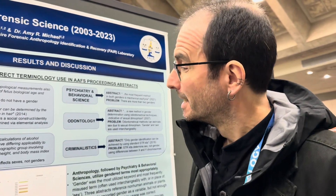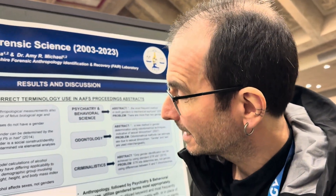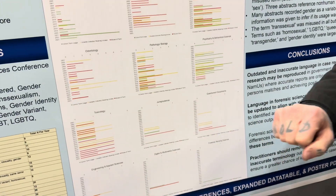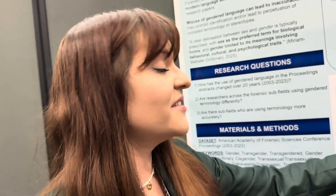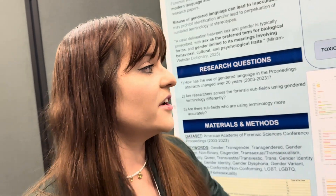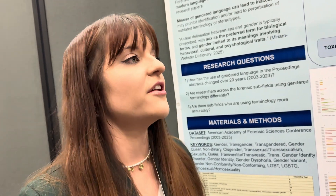At the American Academy of Forensic Sciences, we have different sections. I'm in pathology/biology — which section are you? Anthropology — the bone people. Then we have criminalistics, jurisprudence, digital sciences, and so on. Which of the sections is the most confused about sex and gender? Probably criminalistics. They do a lot of DNA, and they reference STR kits determining gender, not sex, even though they mean XY chromosomes.